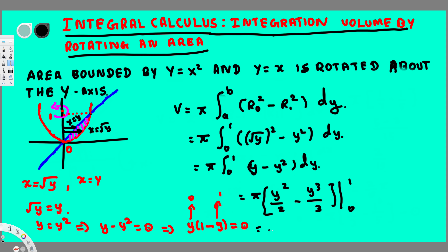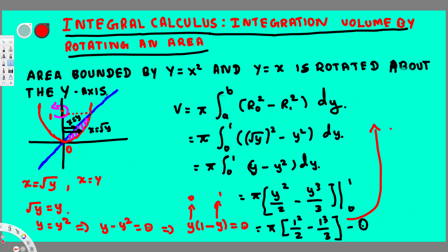Plugging in 1: we get 1²/2 minus 1³/3. Plugging in 0: 0²/2 = 0 and 0³/3 = 0, so the whole lower bound is zero and doesn't change anything. We're left with π times (1/2 minus 1/3). Taking the common denominator of 6: that's 3/6 minus 2/6, giving us π times 1/6.